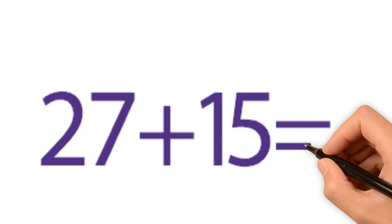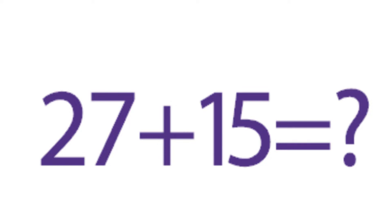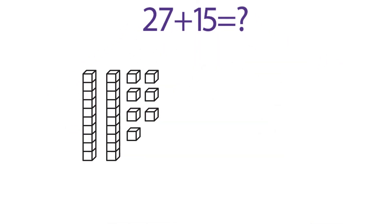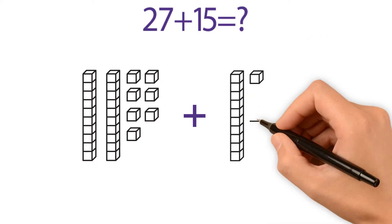27 plus 15. 27 has two tens and seven ones. 15 has one ten and five ones.